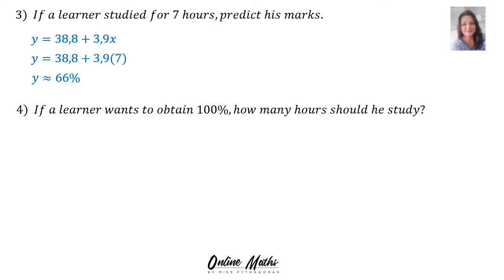Question 4 says, if a learner wants to obtain 100%, how many hours should he study? Into your equation of the line of best fit, in y's place, you will substitute 100 and we will calculate x. So, 38.8 walks across. 61.2 is equal to 3.9x. We will divide away the 3.9 both sides. And the answer, 15.69. Therefore, if he studies for around 16 hours, he will obtain 100%.